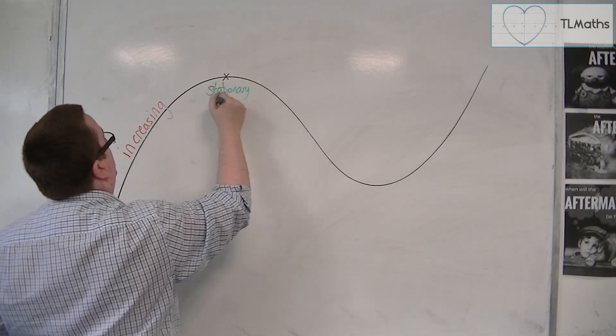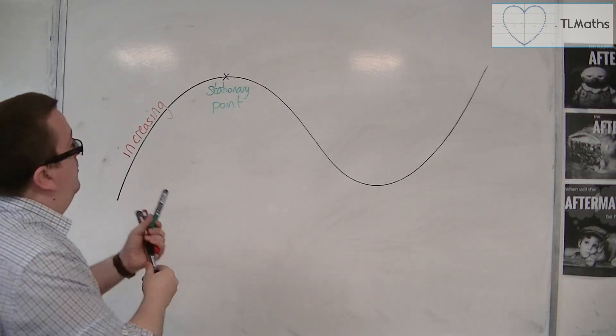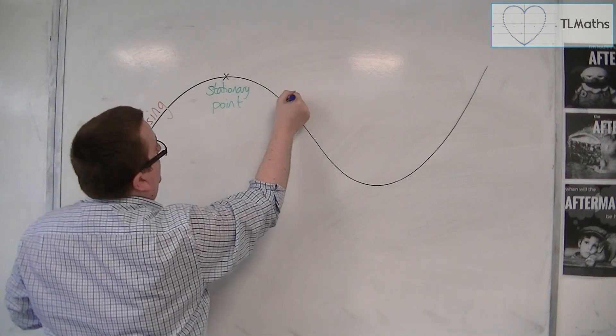So that's a stationary point. And then past that point, we get the curve decreasing.